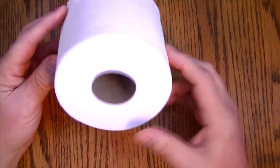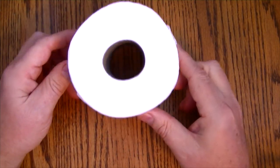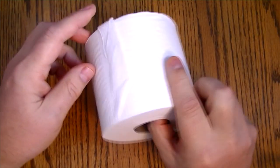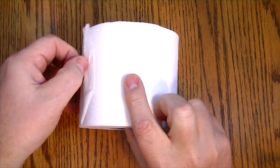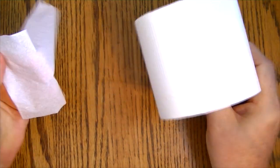First of all, this happens to be a 1000 sheet roll of toilet paper. So we're going to start off with just one sheet. And this is how we make this toilet paper last at least a year.